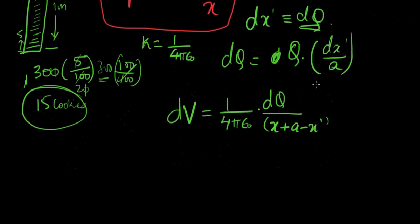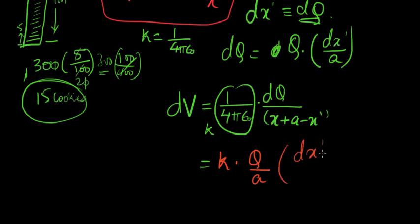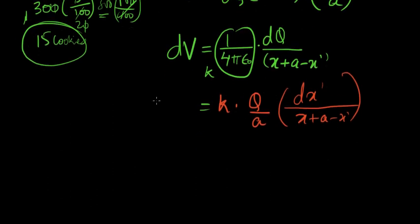Now we have to substitute the value of dQ in this equation, and I'm going to call this k now. So k times, substitute this value instead of dQ. So k times Q over a, and I put dx prime inside a parenthesis over x plus a minus x prime. This is dVP, the potential at point P.